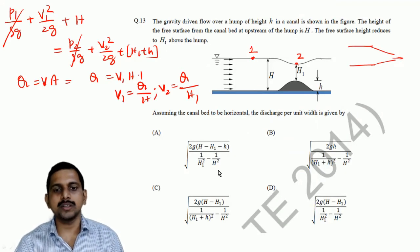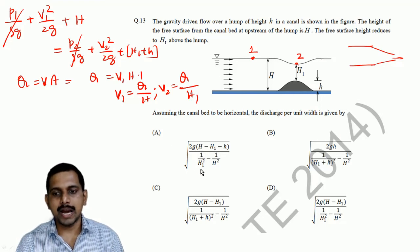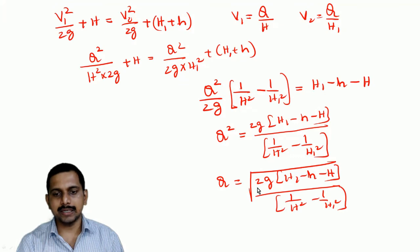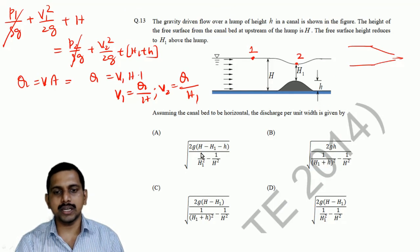Now, if you see the answers, what is close by is answer A, but there is a problem here. When you compare answer A and the answer we have got, they have got it here, h minus h1 minus h.